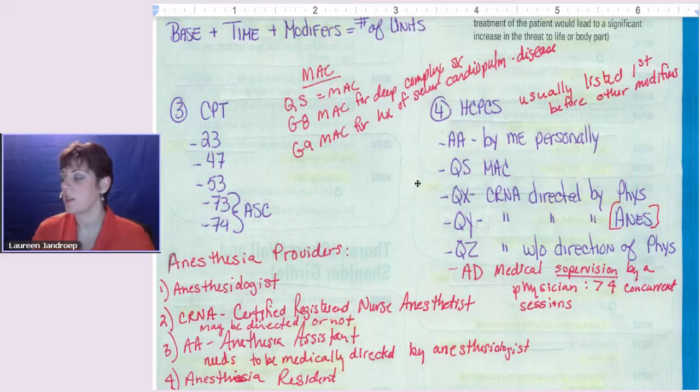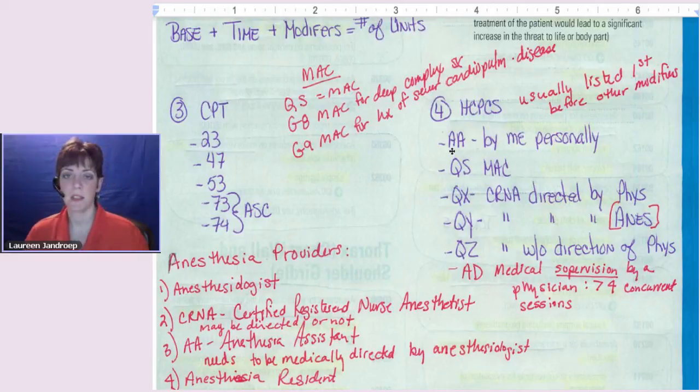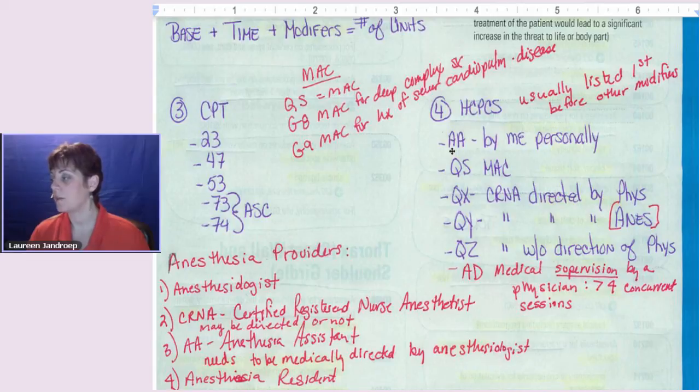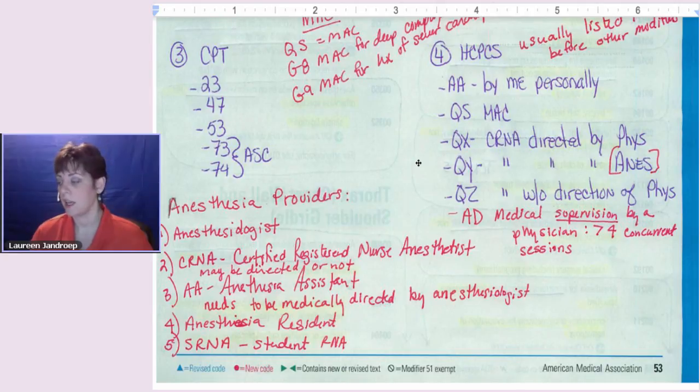Then we've got HCPCS modifiers that really tell who the players were. So these are normally listed before the other modifiers. That's my note here. So you've got AA which is basically the anesthesiologist is saying it was performed personally by me. QS is the MAC modifier. QX is saying it's a certified registered nurse anesthetist that's being directed by a physician, whereas QY is they're being directed by an anesthesiologist, and QZ is they're a CRNA without direction, and AD is medical supervision by a physician who's handling more than four concurrent sessions. So then there might even be more modifiers in the HCPCS, but just to get you an idea, there's a whole lot of modifiers going on for anesthesia. So use the ones that apply to your situation and hopefully that will help you feel a little better about anesthesia modifier coding.